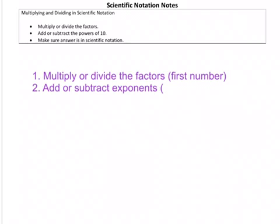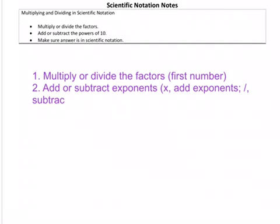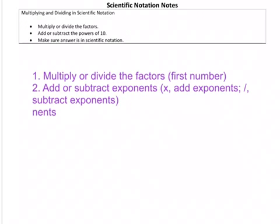When you are multiplying, you add exponents. When you're dividing, you subtract the exponents. The third step is to make sure your answer is in correct scientific notation.